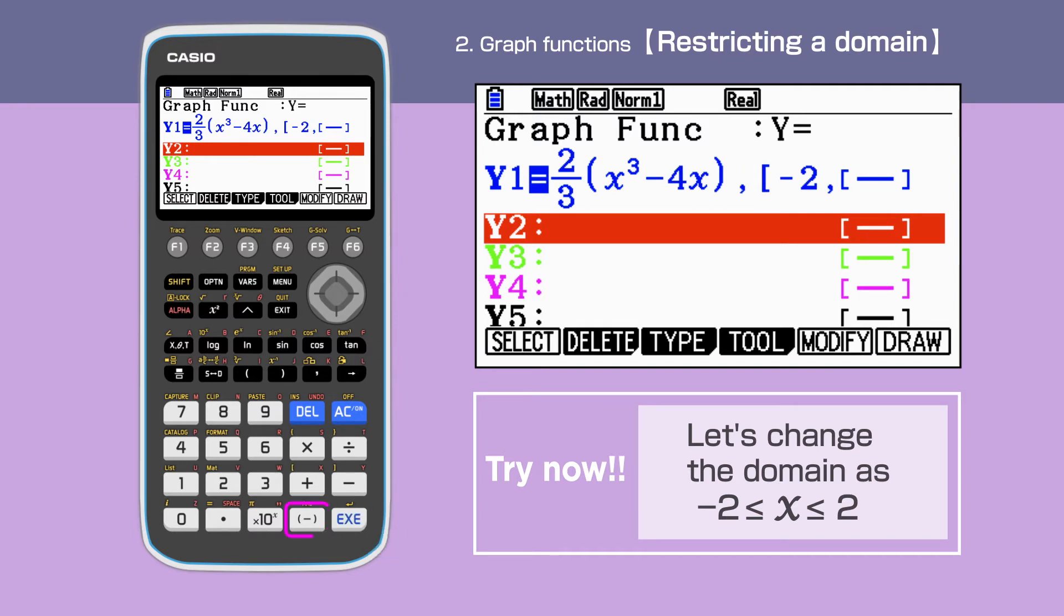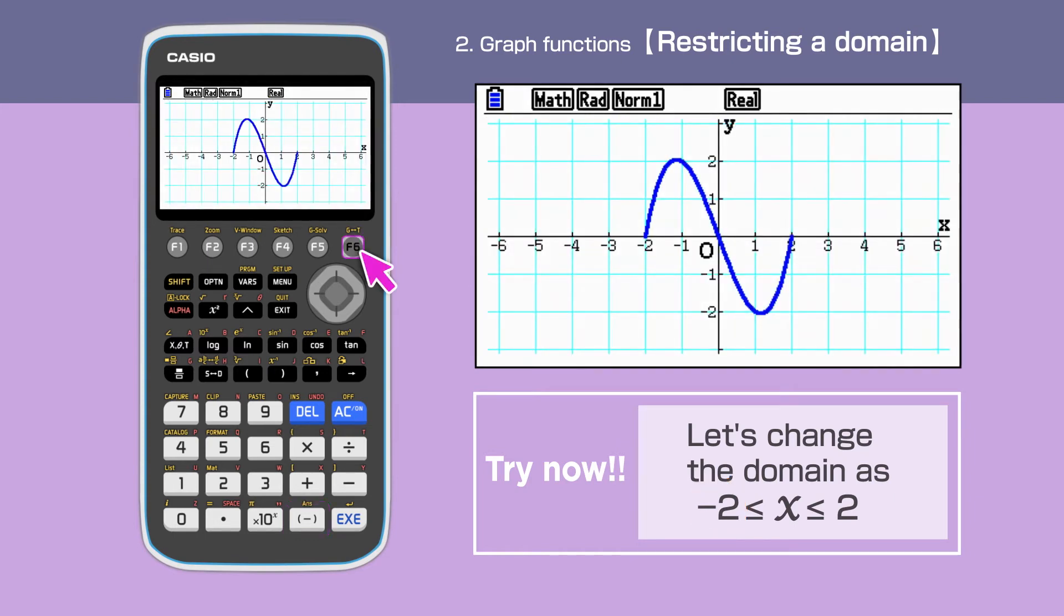We need to use the bracket minus negative key for the negative 2, not the subtract key. Press F6. Now we have drawn the graph with the domain.